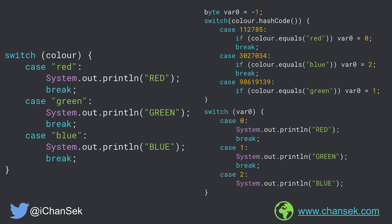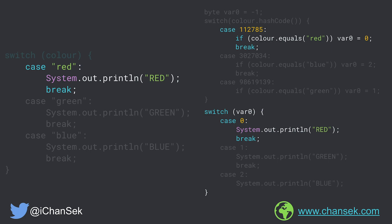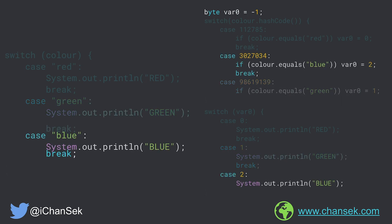The first switch statement is based upon the hash code of the switch parameter, whereas the second switch statement is the one containing our original code. Comparing the source code and the compiled code: the switch with color as parameter is converted into a switch with its hash code. The first case red is converted into red's hash code in the first switch statement, with var0 set to 0, and then handled as case 0 in the second statement. Similarly, green is converted into its hash code in the first switch and case 1 in the second, and the same applies to blue.